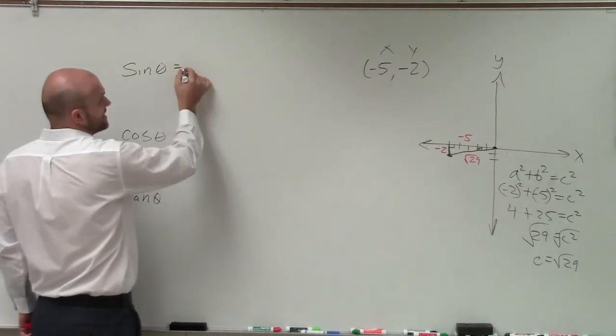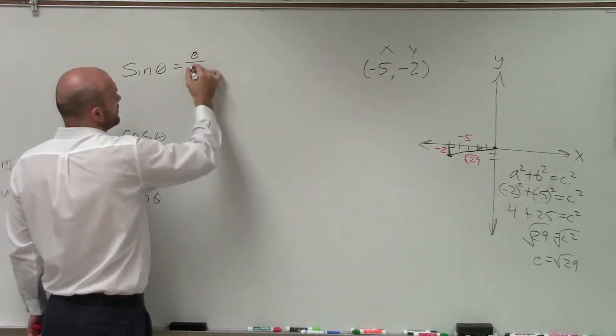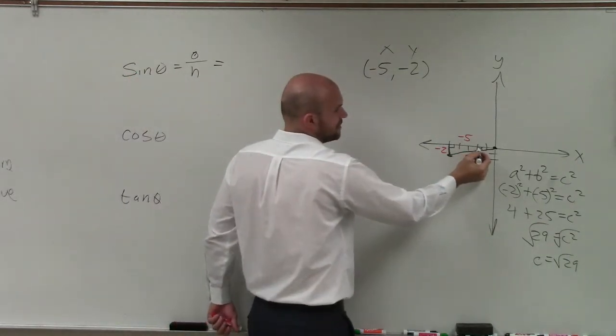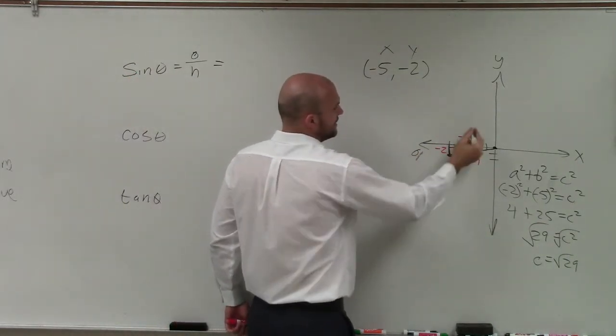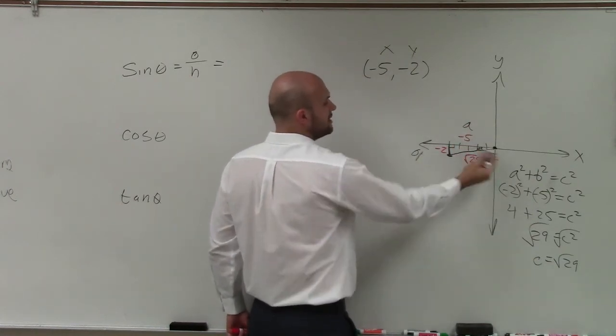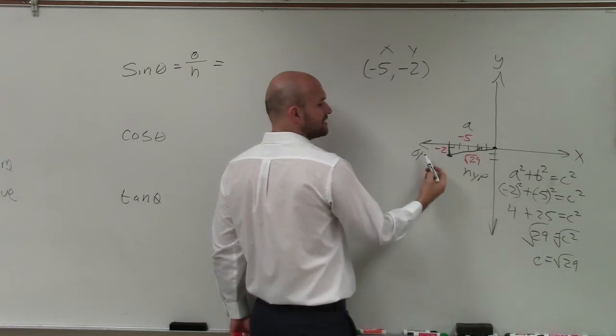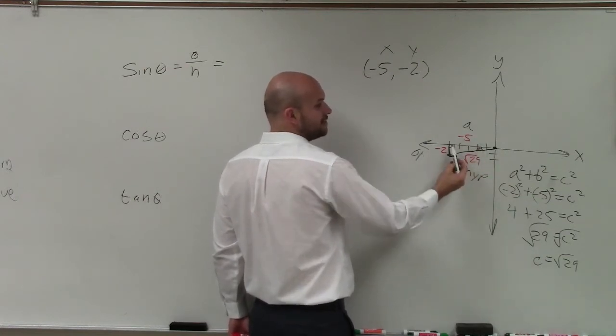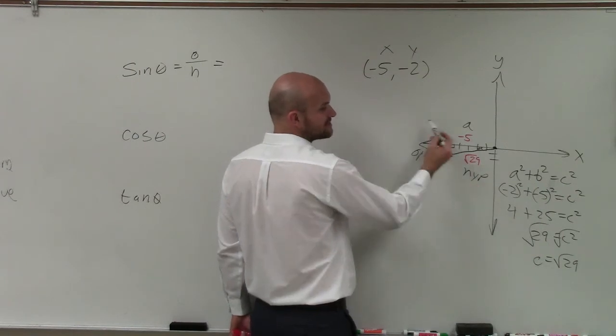So remember, sine of theta is opposite over hypotenuse. So the opposite side, remember, here's my central angle. All right? So here's going to be the opposite side. Here's my adjacent side. And here's my hypotenuse. All right? You got to remember that the opposite is always directly across from your theta, your angle. Your adjacent side is always between your angle and the 90 degree. And your hypotenuse, obviously, is always across.